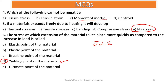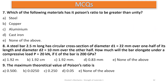Number seven: which of the following materials has a Poisson's ratio greater than unity (which is one)? The answer is none of them — there is no material with a Poisson's ratio greater than one. All Poisson's ratios are less than one for any material. The range falls between zero and one, so there is nothing greater than one.